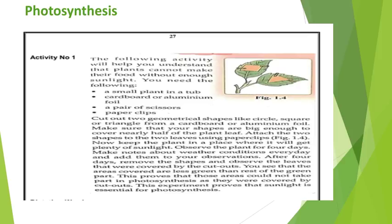Cut out two geometrical shapes like circle, square, or triangle from a cardboard or aluminum foil. Make sure that your shapes are big enough to cover nearly half of the plant leaf. Attach the two shapes to the two leaves using paper clips.